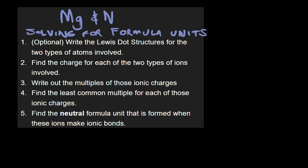We've got magnesium here. The very first step, it says optional. This is optional, but it's useful. Write the Lewis dot structures for the two types of atoms involved. Lewis dots are just dots that are drawn for every valence electron that the atom or ion has. We're going to go ahead and draw two for magnesium, and we're going to have five for nitrogen.